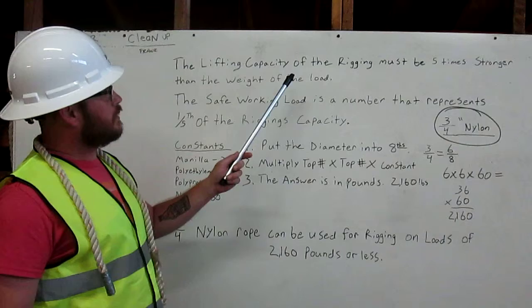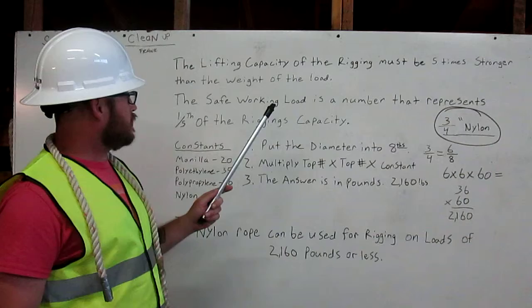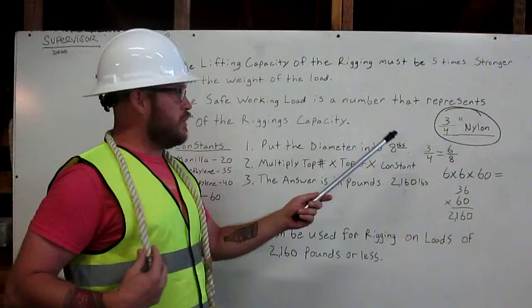Lift capacity: the rigging must be five times stronger than the weight of the load. The safe working load is a number that represents one-fifth of the rigging's capacity.